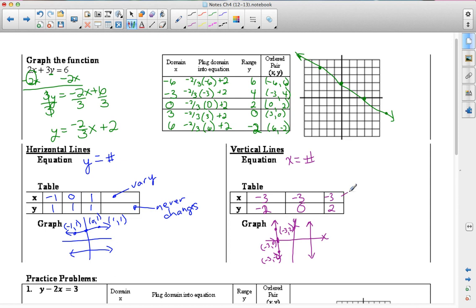So again, in the case of a vertical line, the x values never change. And the y values vary.